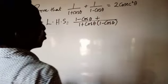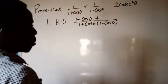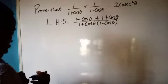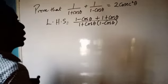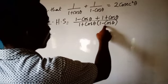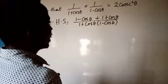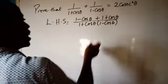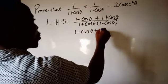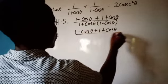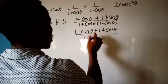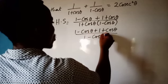This cancels out, and we are left with 1 plus cos theta times 1, which is 1 plus cos theta. Now these are difference of two squares. We can group this into (1 minus cos theta) plus (1 plus cos theta) all over (1 plus cos theta)(1 minus cos theta).